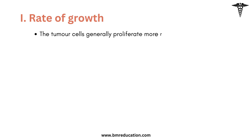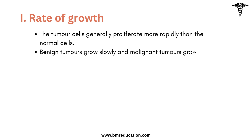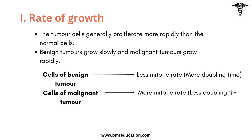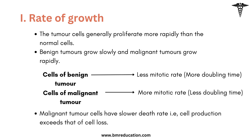The rate of growth. Tumor cells generally proliferate more rapidly than normal cells. Generally, benign tumors grow slowly and malignant tumors grow rapidly. The cells of benign tumors have a less mitotic rate — that means more doubling time — but the cells of malignant tumors have more mitotic rate, meaning less doubling time. Malignant tumor cells have a slower death rate, meaning cell production exceeds cell loss.